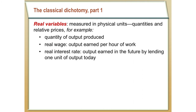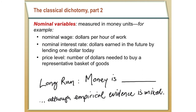Nominal variables, in contrast, are measured in dollars — money units. The nominal wage is how many dollars we get paid per hour of work. The nominal interest rate is the dollars earned in the future by lending one dollar today. The price level is the number of dollars needed to buy a certain amount of goods and services. The classical dichotomy refers to the idea that there is a separation between nominal and real variables — nominal variables do not impact real variables.